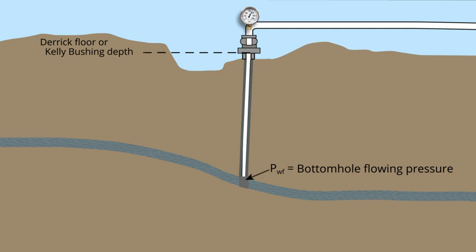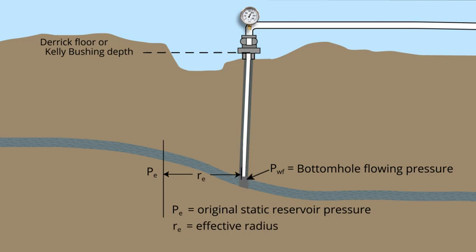The bottom hole flowing pressure is symbolized by capital P sub WF. Also shown is the symbol capital P sub E at a distance R sub E, which stands for the original static reservoir pressure and the effective radius. Stated another way, the reservoir pressure not affected by human operations.